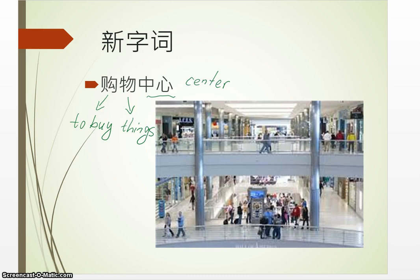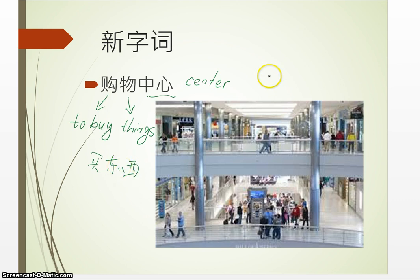For example, 购物 — 购 means 'to buy', and 购物 means 买东西 (to go shopping). But when we form 'shopping center' in Chinese, we wouldn't say 买东西中心 because 买东西 is a colloquial word and 购物 is a written word. So we use the written word to form the name of a place: 购物中心。